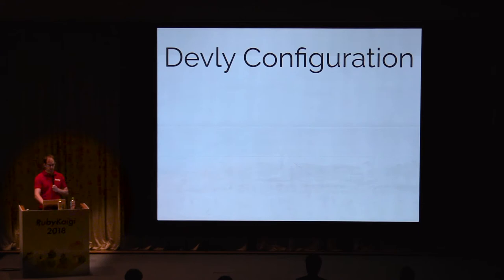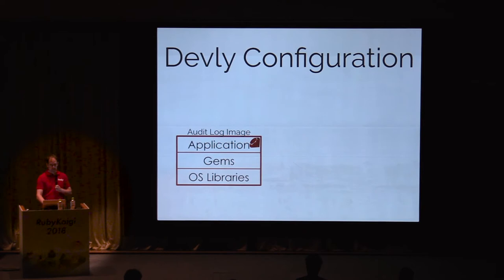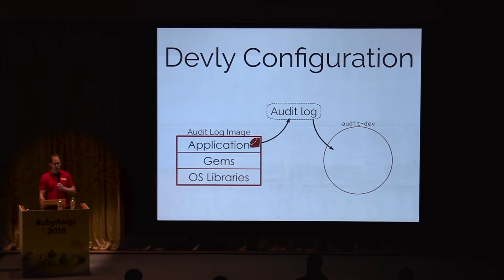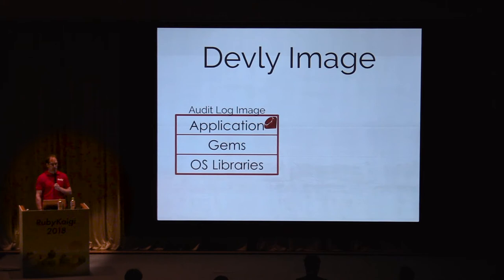Devly is distributed for macOS and Linux. We provide a standalone executable built by Ruby Packer and provide packages for macOS and for Debian. Devly lets you configure all of your services. It helps you build images from your repositories using Docker files. It allows you to configure those images to run as services.